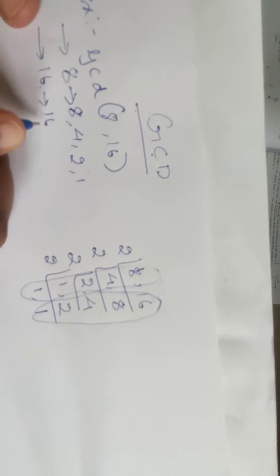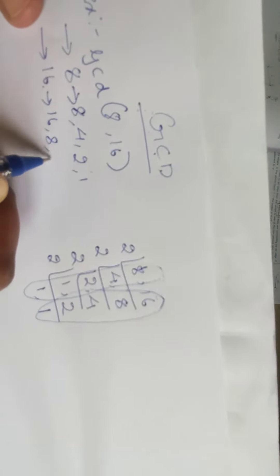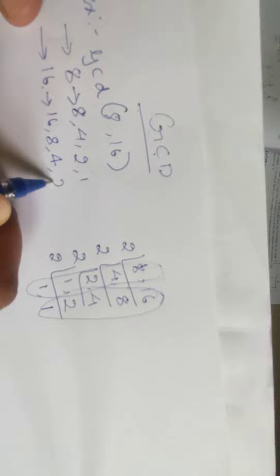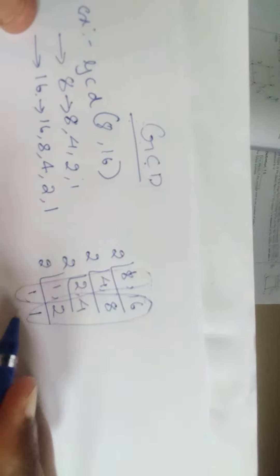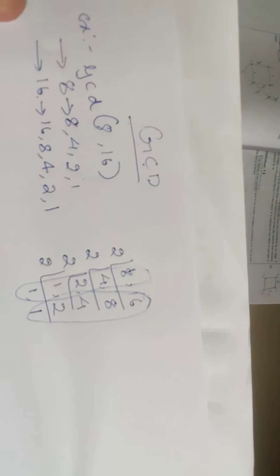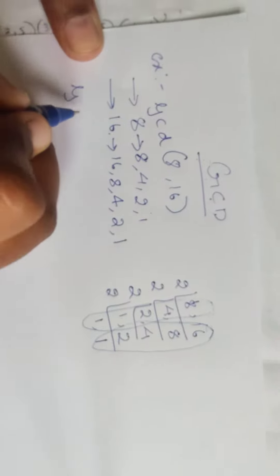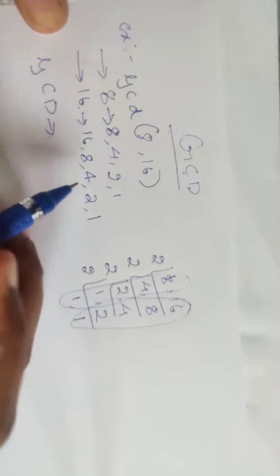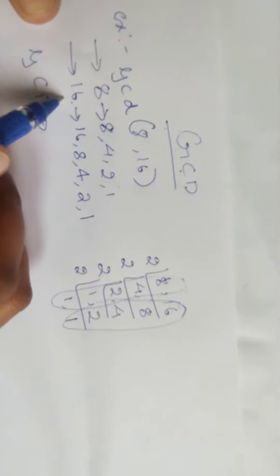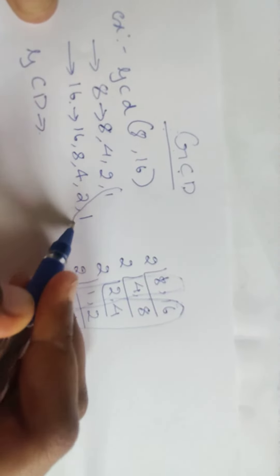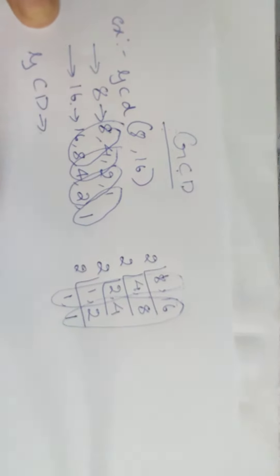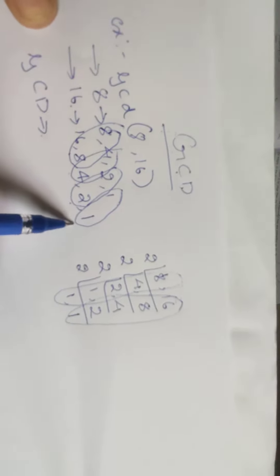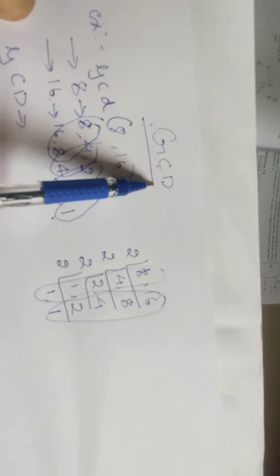For 16, we have the factors: 16, 8, 4, 2, and 1. Now to find the GCD, we identify the common numbers between 8 and 16. The common factors are 1, 2, 4, and 8. GCD means greatest common divisor.